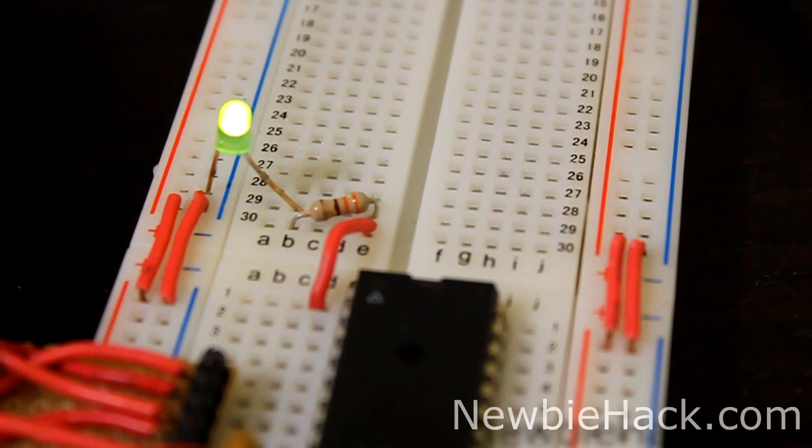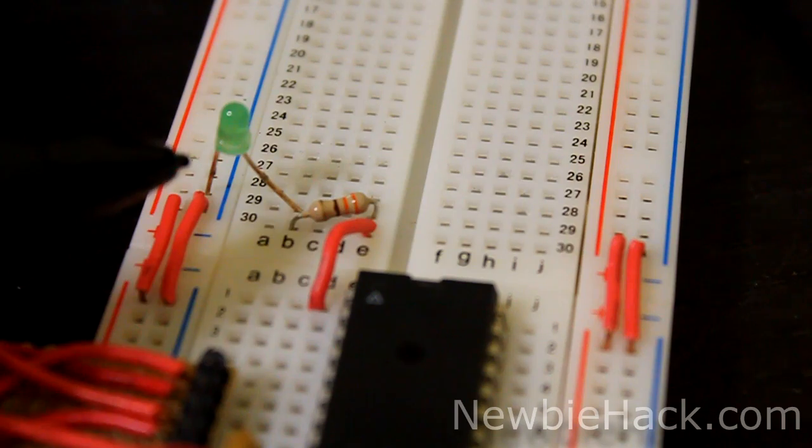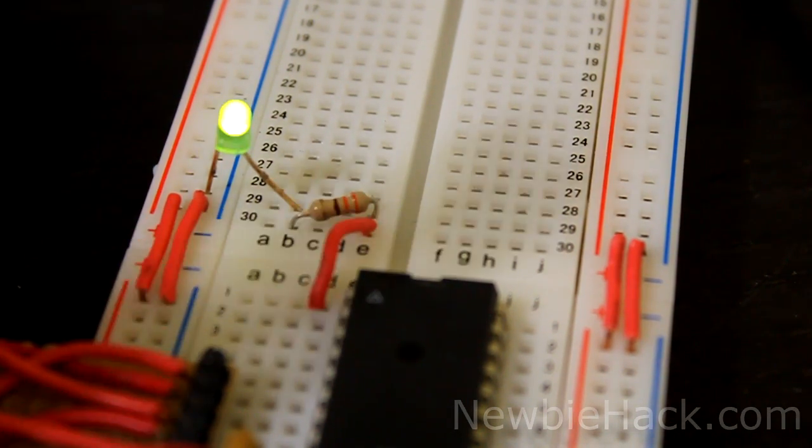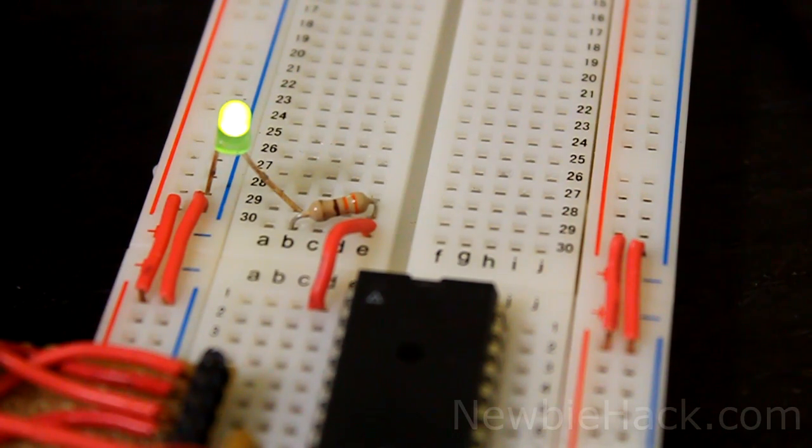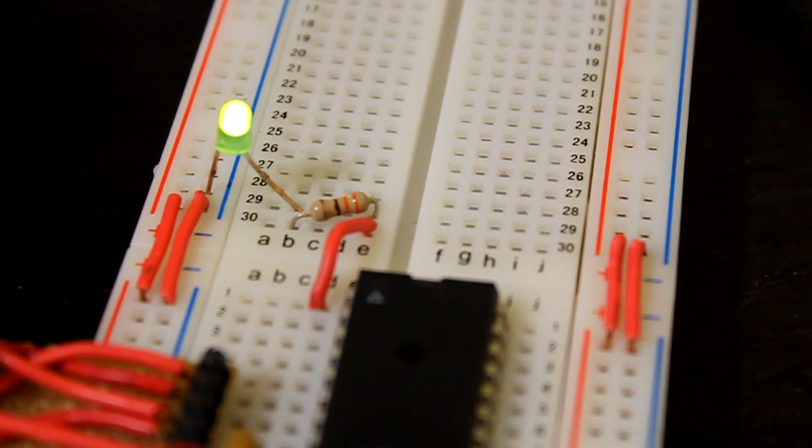Okay, after making and programming it, it appears that the LED that we have on pin one is in fact blinking at one second, or it's toggling at one second. So first try was a charm, and that is how you use interrupts and using the timer as an example.